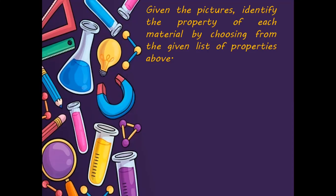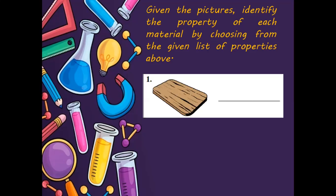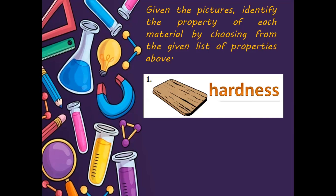The first example is a chopping board. What is the property of a chopping board? The property is hardness — kasi ano bang ginagawa natin sa chopping board? Dito tayo nagtatagtad ng karne, gulay, bawang, sibuyas. Lagi siyang natatamaan ng kutsiyo — minsan malalaking itak pa yung ginagamit natin sa pagtatagtad ng karne — pero still matigas at matibay pa rin si ating chopping board. The property of chopping board is hardness.